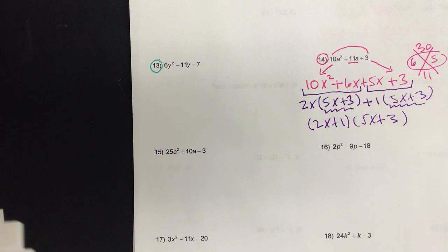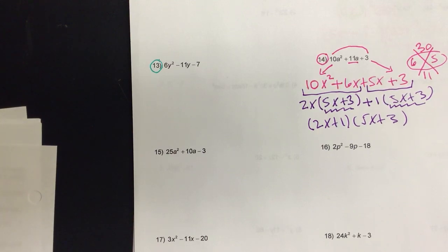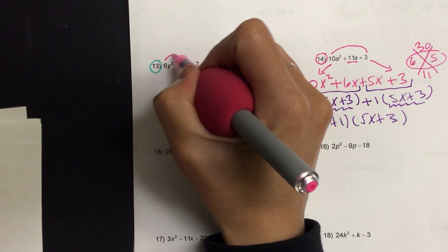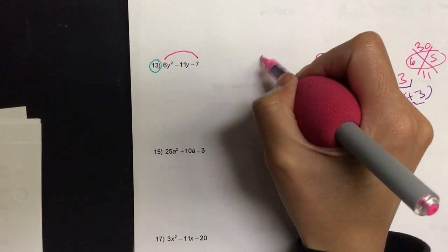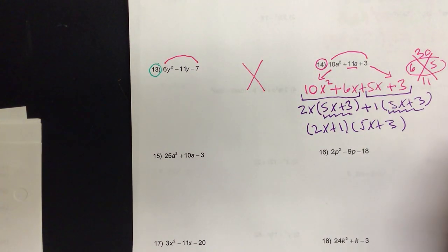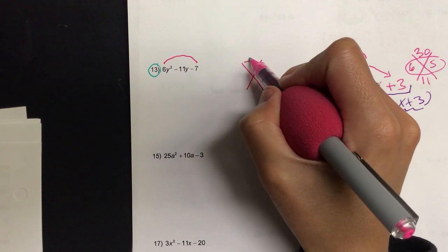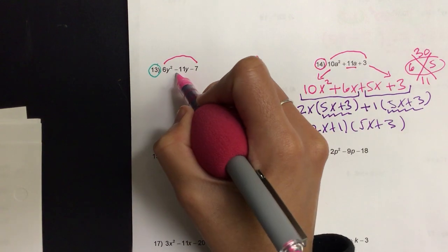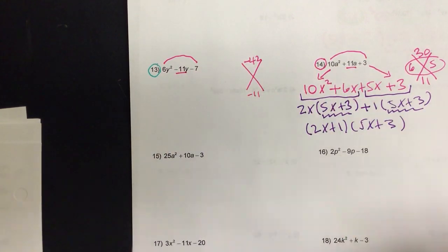Okay, so for this one, because we have a coefficient other than a one, we have to do grouping. So let's multiply A and C. So what is the A times C in this case? 42. Oh, negative 42. And then my B value is negative 11.